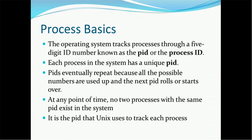The ID will not be repeated. PIDs will eventually repeat because all possible numbers are used up and the next PID rolls over. Suppose there are several processes that completed — in that case the PID will reuse a number used earlier but which is no longer active. All active processes will have unique process IDs. At any point in time, no two processes will have the same PID. It is the PID that Unix uses to track each process.